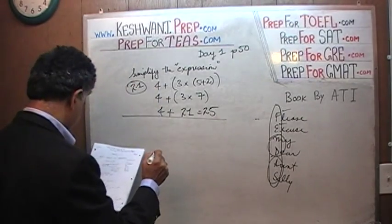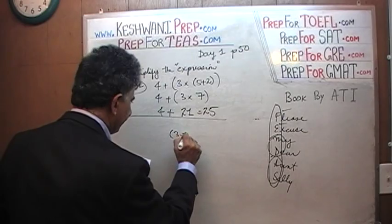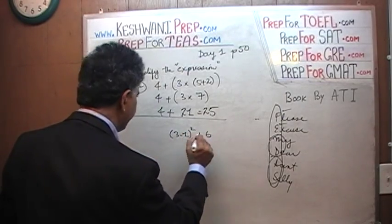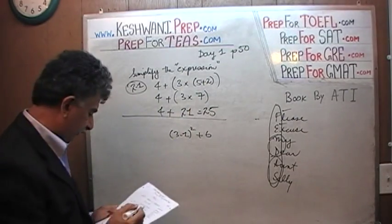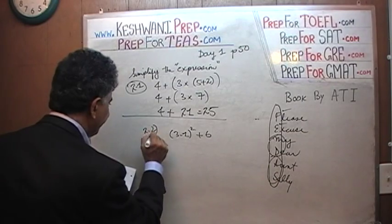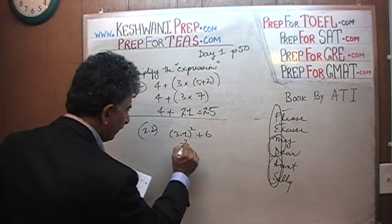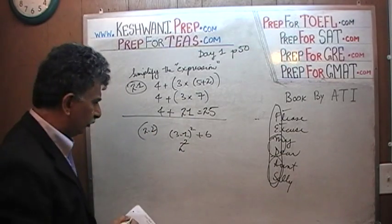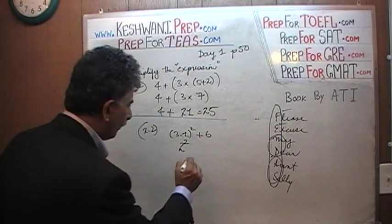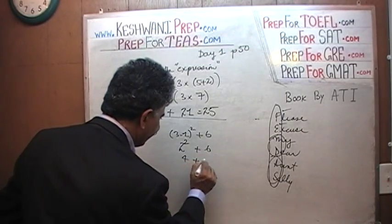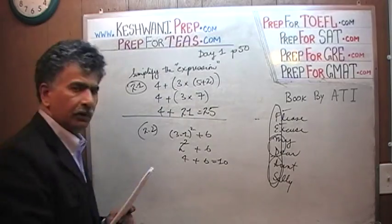The next one, 2.2, says 3 minus 1 squared plus 6. Again, simplify the expression as the instruction. 3 minus 1 is 2. 2 squared is 4. 4 plus 6 is going to be 10. Let's move on then.